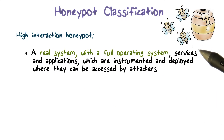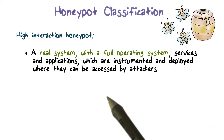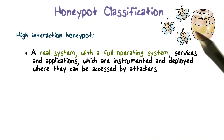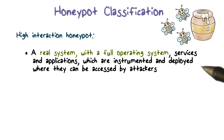A high interaction honeypot essentially replicates what a real server or workstation has in terms of operating systems, services, and applications. In other words, they look really realistic and can be deployed alongside real servers and workstations.